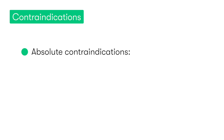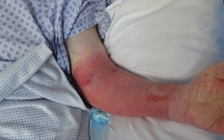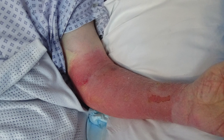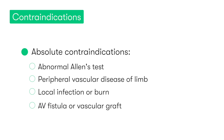Absolute contraindications to performing ABG sampling for a patient's radial artery include an abnormal Allen's test, if the patient has known or suspected peripheral vascular disease of the limb, local infection or severe burns at the site of the planned arterial puncture, and also if the patient has an arteriovenous fistula or a vascular graft, in which case it's essential that we stay well away from these sites.